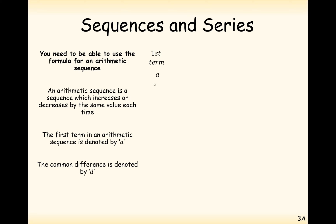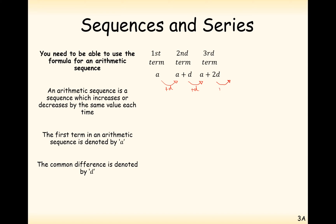The first term is going to be a, so we're going to give a separate letter to the first term. The second term is going to be a plus the common difference d, so the second term is a plus 1d. The third term is going to go up by the same amount again — another d — so it's a plus 2d. d could be negative, but here we write it as an algebraic value. The fourth term is going to be a plus 3d.